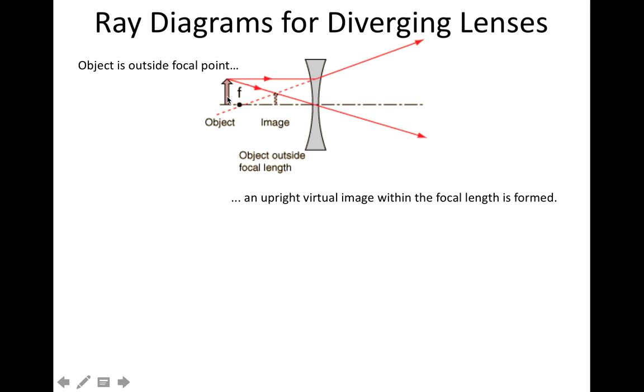Here, my object is outside the focal point right now. You can see this object is to the left of the focal point, which is marked with an F. And what you see here is that the image ends up on the same side of the lens as the object. And so we call it a virtual image. Notice that this light ray does not pass through that image.